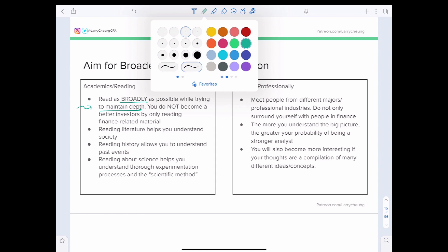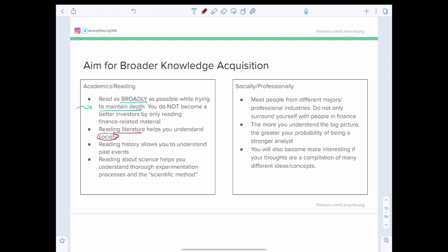In fact, I believe that liberal arts majors have a broader perspective of how the world works, of how society works, and therefore once you train them on hard skills and the technicals, longer term they might be able to outperform only finance majors who just focus on that specific narrow area. As an example, when people read literature, it helps them understand society. When they read history, it allows them to understand past events. Reading about science helps you to understand thorough experimentation processes and the scientific method.